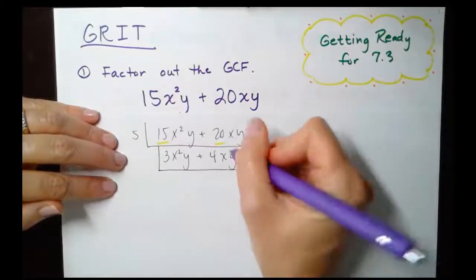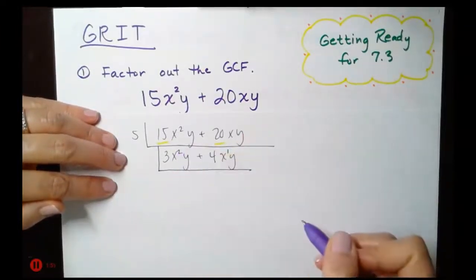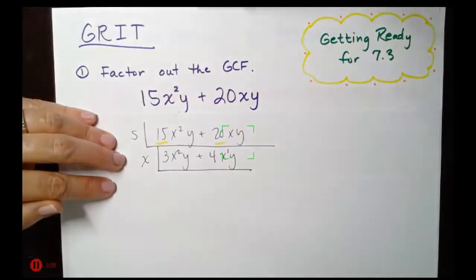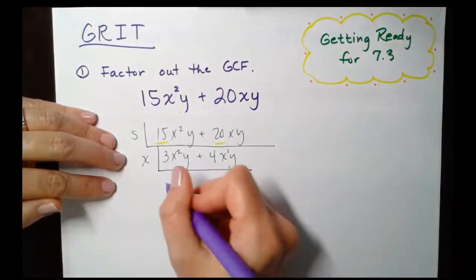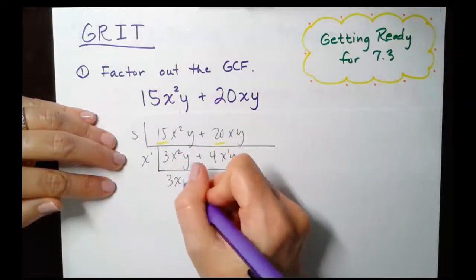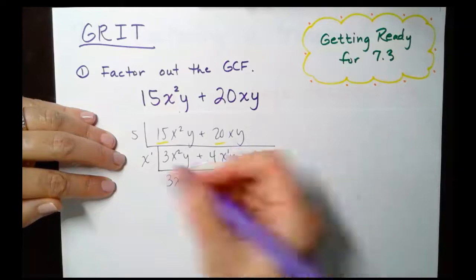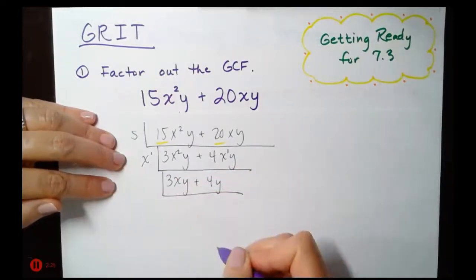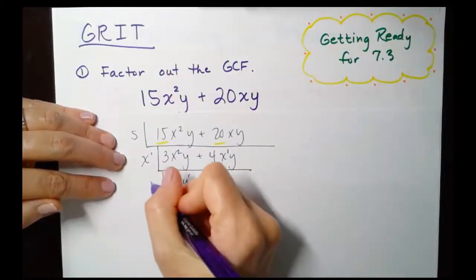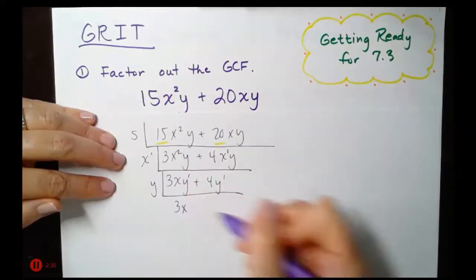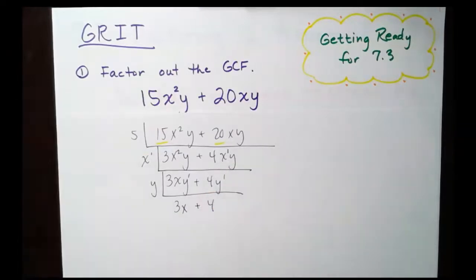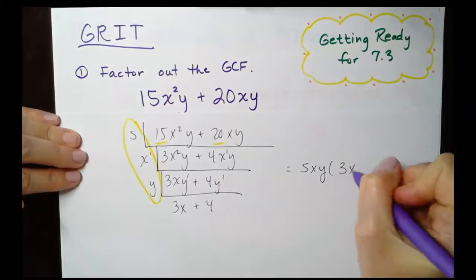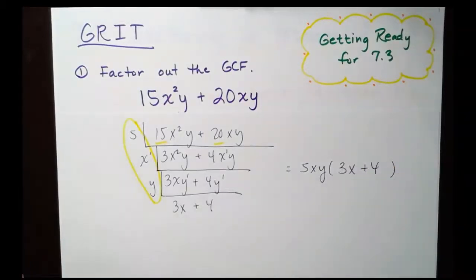Now let's go after the x's. This term has 1 power of x, this one has 2 — they both have at least 1 power of x, so we're going to take out x to the first power. The 3 comes down. x² divided by x¹: 2 minus 1 leaves 1, bring down the y. Bring down the 4; x¹ divided by x¹ leaves x⁰, so no more x's, bring down the y. Last step — take out the y's. They both have 1 power of y. The y's cancel; we end up with 3x. 4y divided by y leaves 4. So our greatest common factor is 5xy, and the remaining factor is 3x plus 4. We have taken out the greatest common factor — that was Section 7.1.